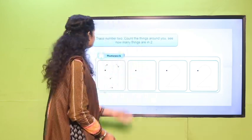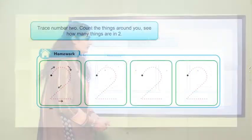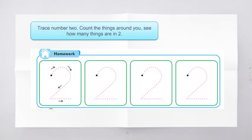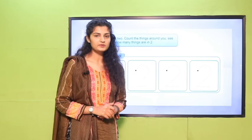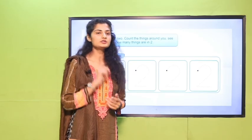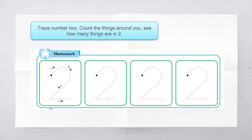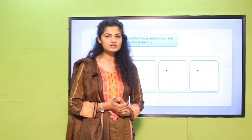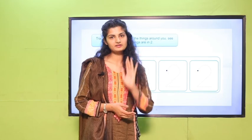So playgroups, in the end, this is your homework. What I want you to do: take a neat paper and the crayon and do the tracing of number two by yourself. This is all for now. Thank you. Bye-bye.